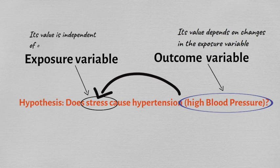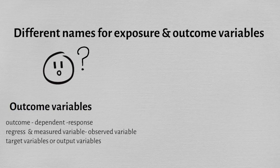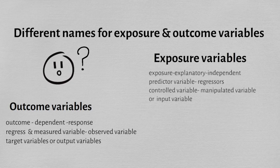You must not forget that the exposure variable is independent and not influenced by any other variable. Outcome variables are known by several other names: dependent variable, response variable, regressand, measured variable, observed variable, target variable, or output variable. Similarly, exposure variables can also be called explanatory, independent, predictor, regressor, control, manipulated, or input variable.